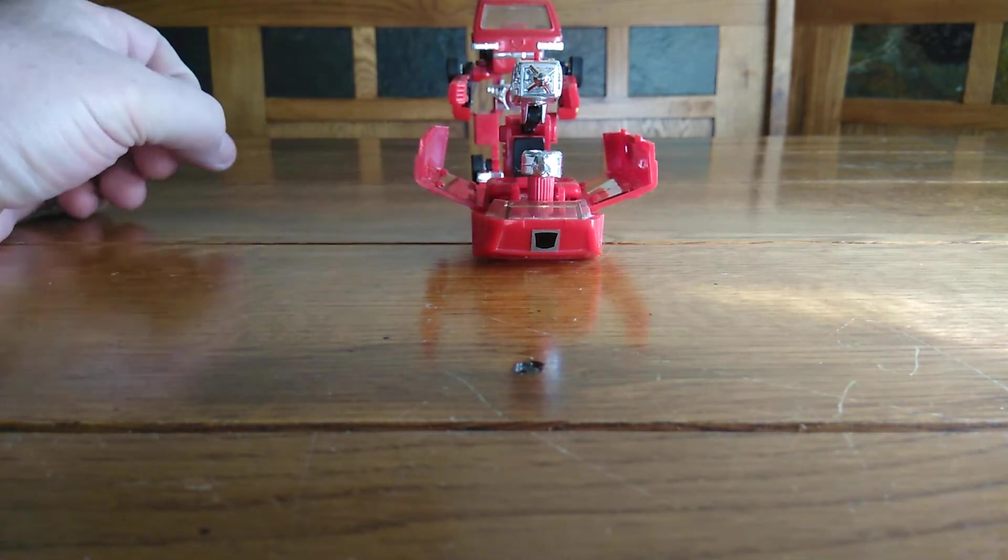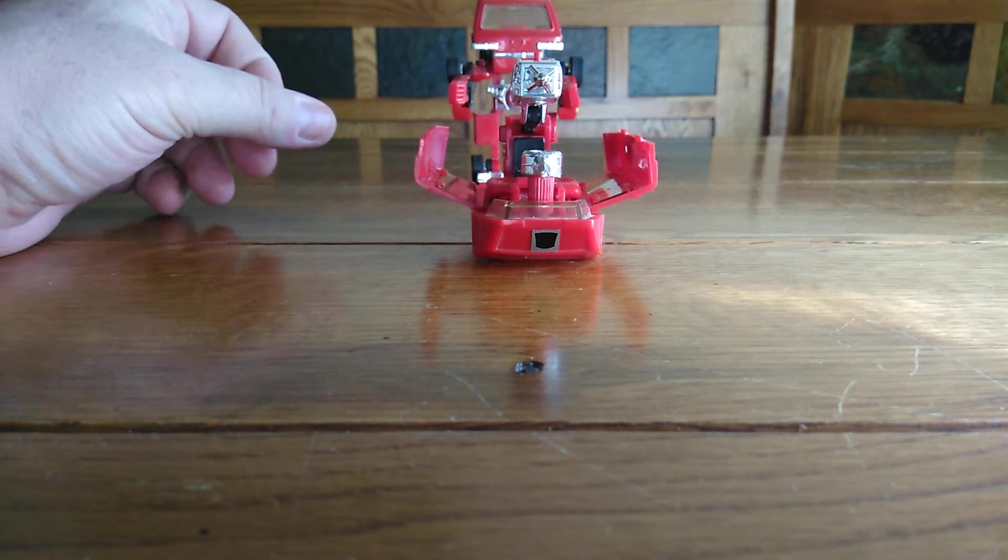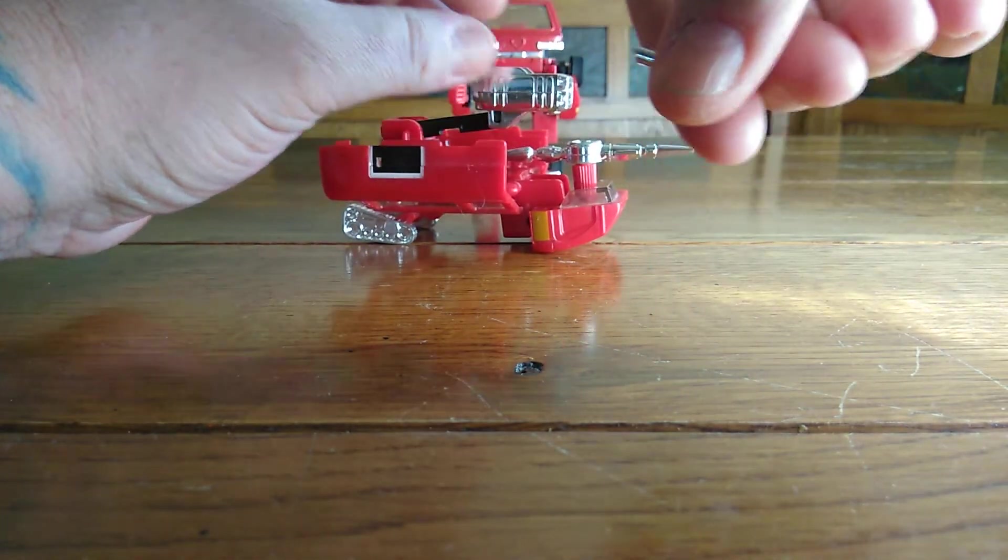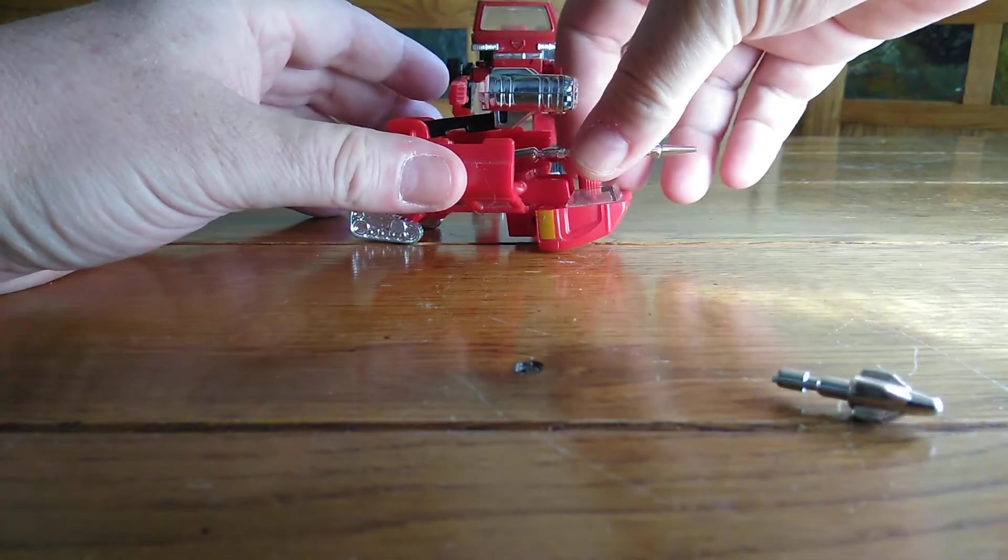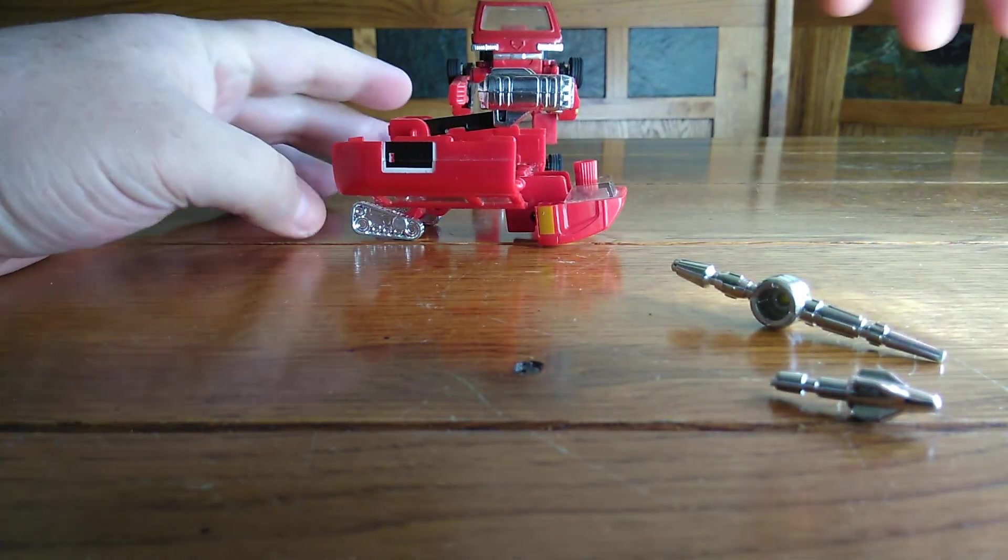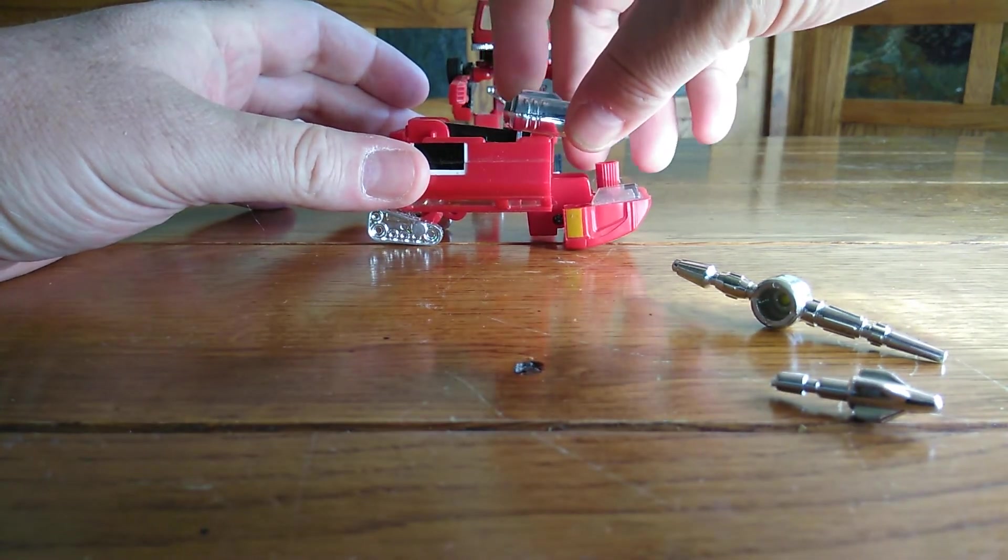So, basically, to transform this guy, first of all, you're going to take the command base. You're going to eject the little missile here and take off this little gun deal here. Now, this just tucks down, kind of like that.